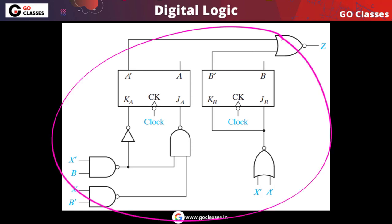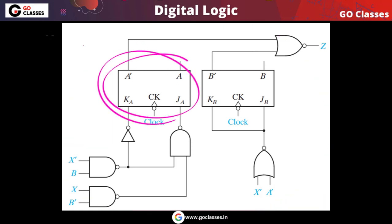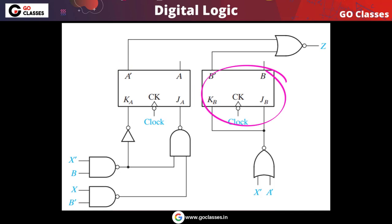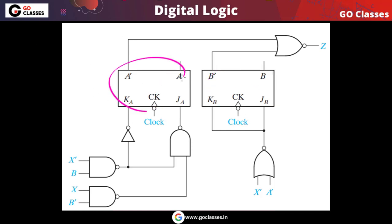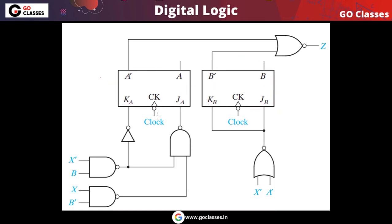This is a sequential circuit. We have a flip-flop here and another flip-flop here — two JK flip-flops. This is a JK flip-flop and this is a JK flip-flop. So we have two JK flip-flops in this circuit.